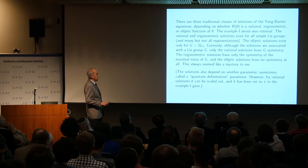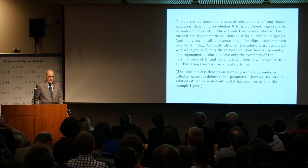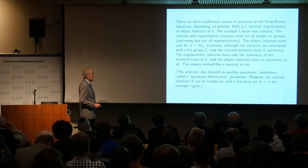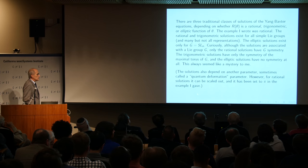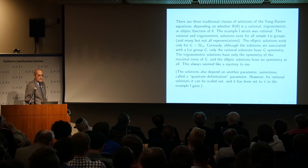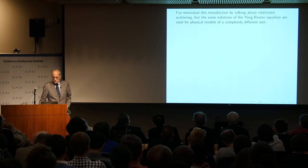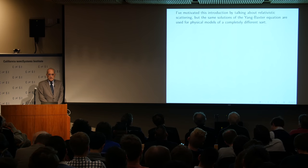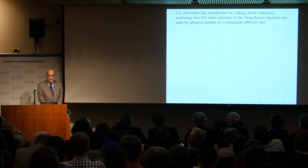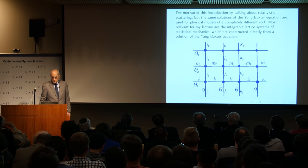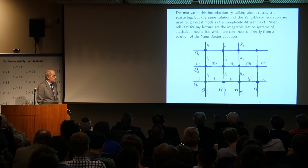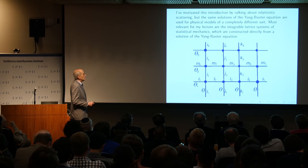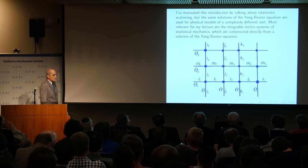These are some of the strange facts about the subject that Costello's work ultimately provided a new perspective on. The solutions also depend on another parameter — a quantum deformation parameter — but for rational solutions it can be scaled out, so you didn't see it in the example I gave. I motivated this discussion so far by talking about relativistic scattering, but the same solutions of Yang-Baxter are used for physical models of a completely different sort.